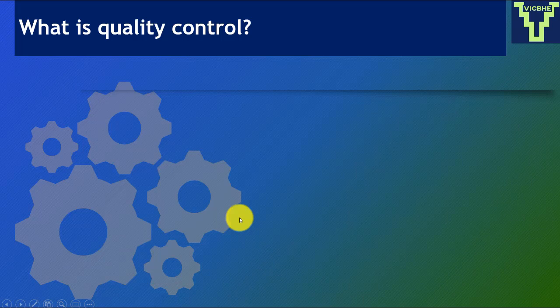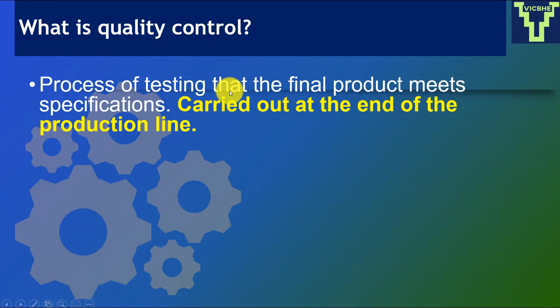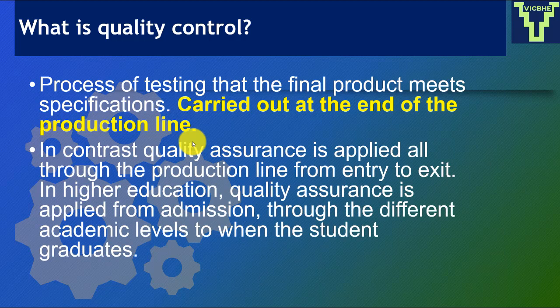Basic concept number four is quality control. Quality control is a process of testing that a final product meets specifications, and it is carried out at the end of the production line. In a factory manufacturing tomato puree or Coca-Cola, quality control checks at the point the bottle is coming out whether there are defects, and defective products are discarded. In higher education, quality control would only check at the end — checking whether students at graduation have met minimum standards — whereas quality assurance is applied all the way through, from entry to exit.